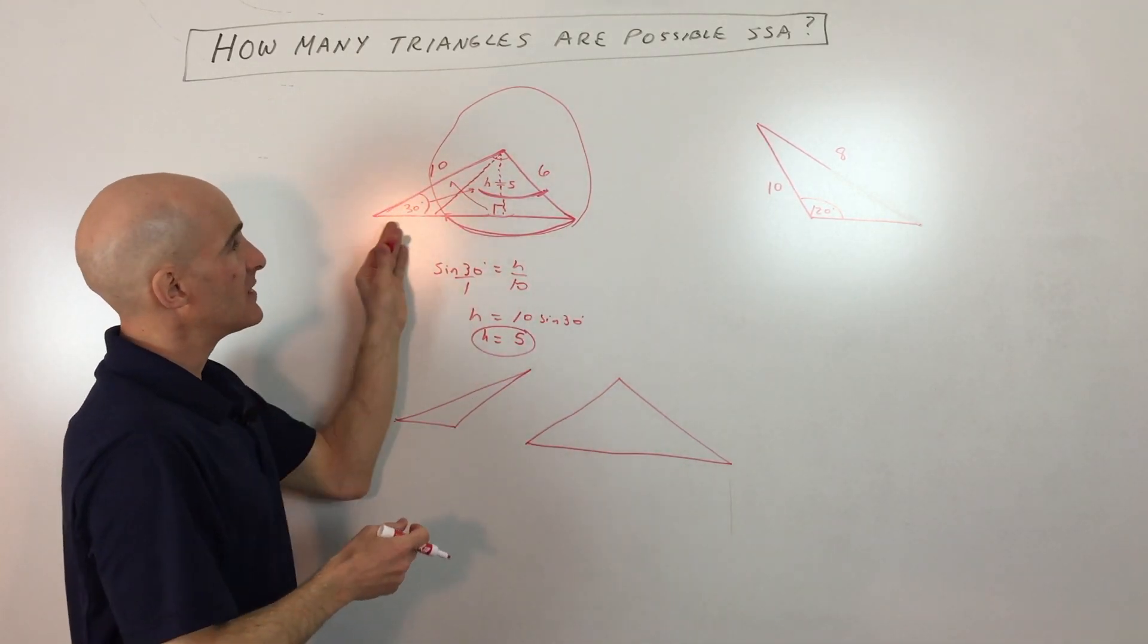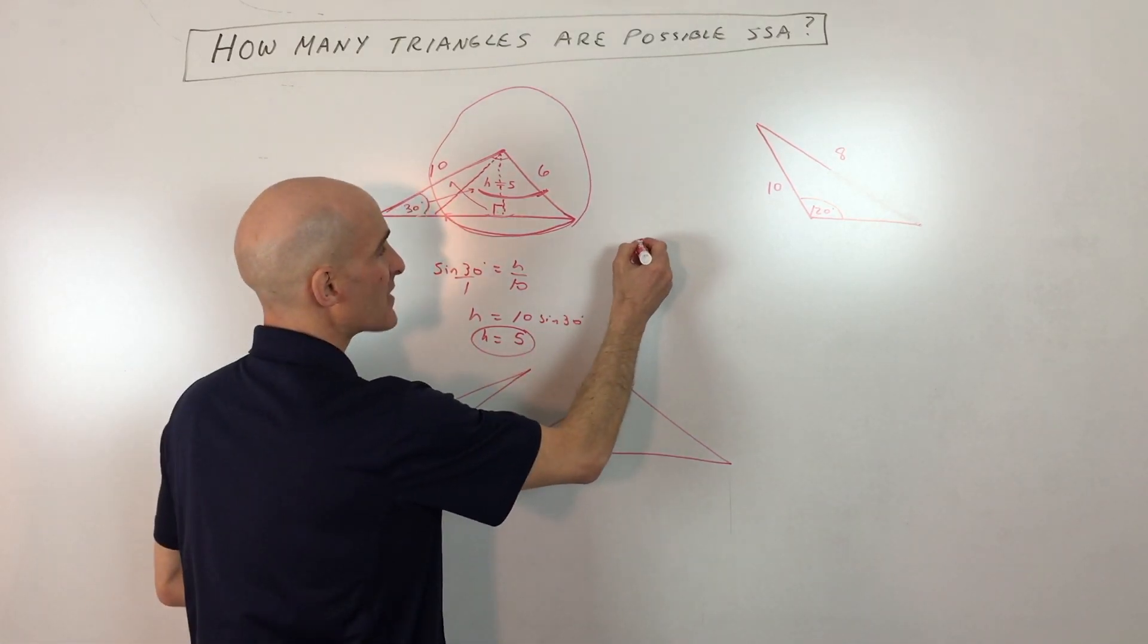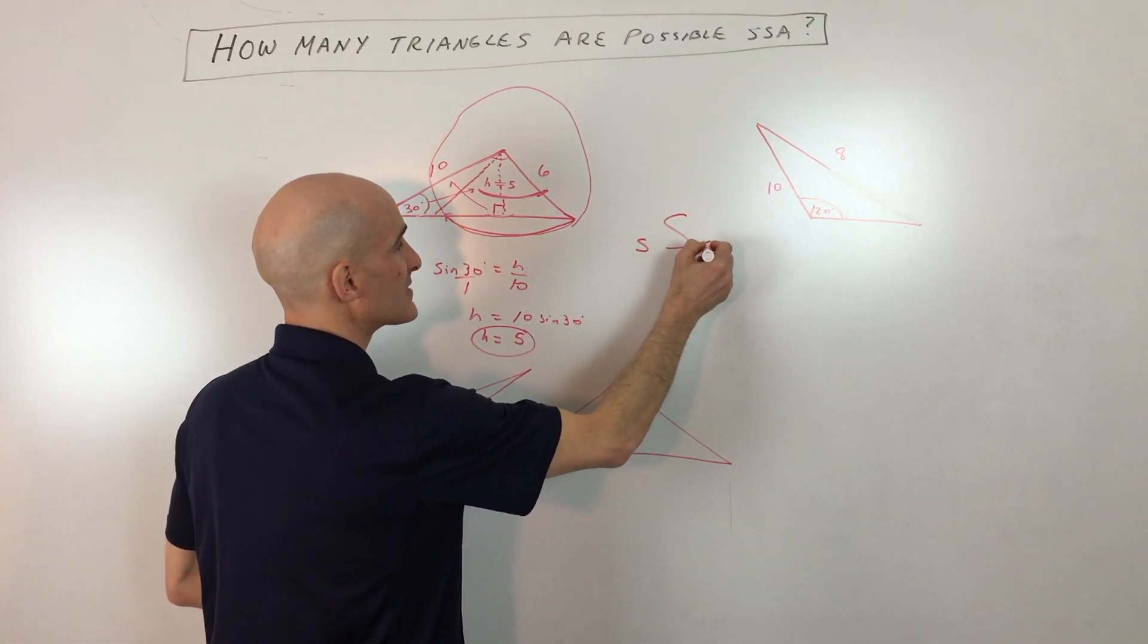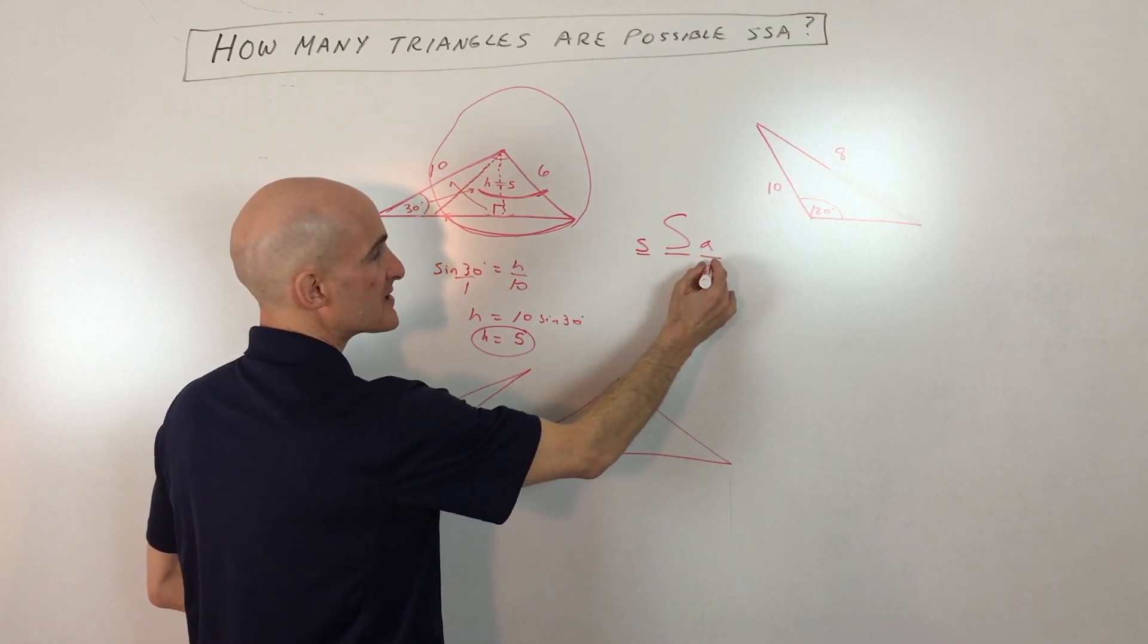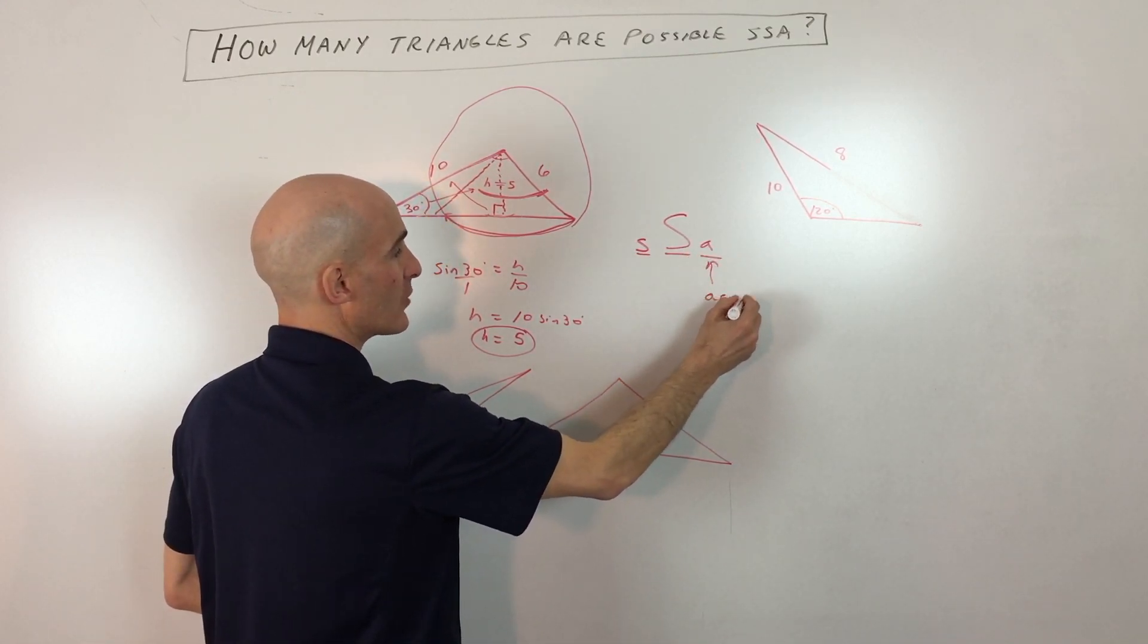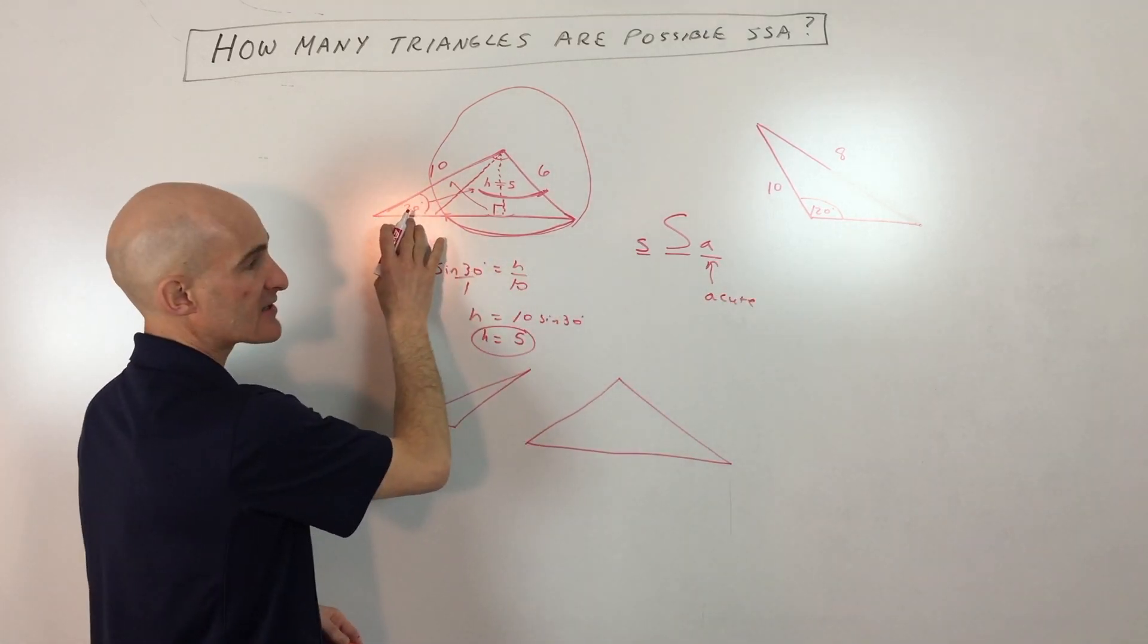One other thing about this ambiguous case is that sometimes I write it like this. It's a bit more descriptive—side-side-angle. Notice I used a lowercase 'a' to represent an acute angle, which is what we have here, less than 90.